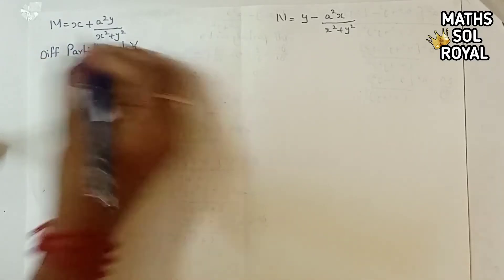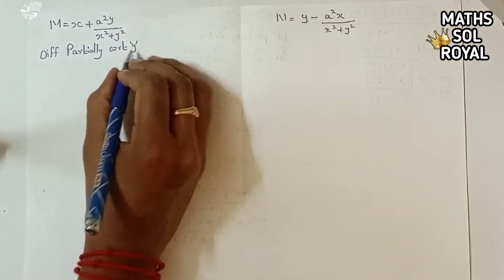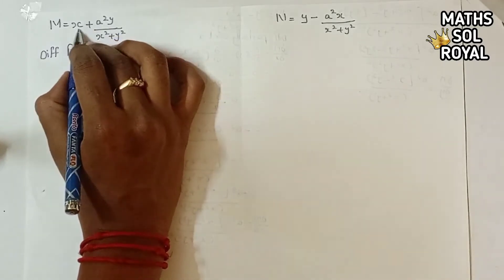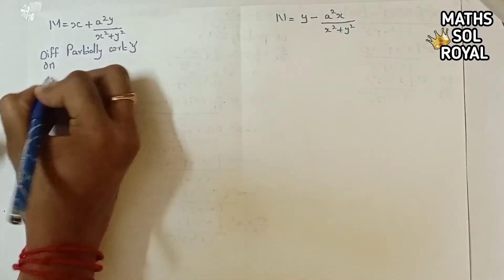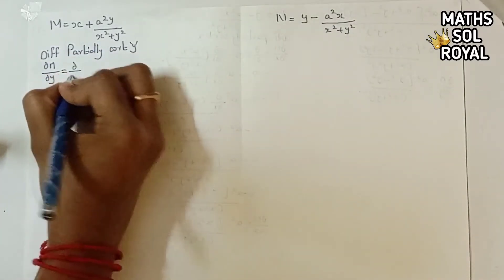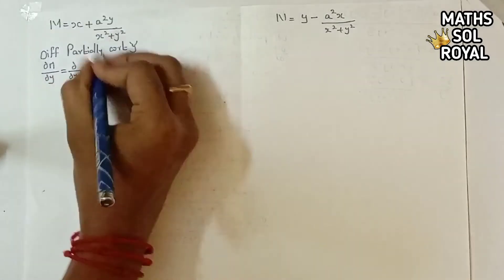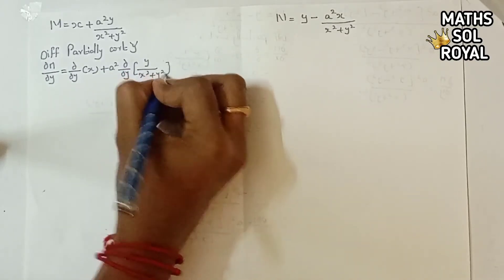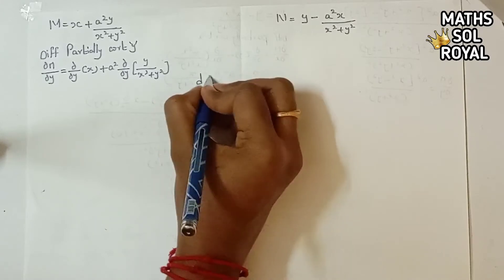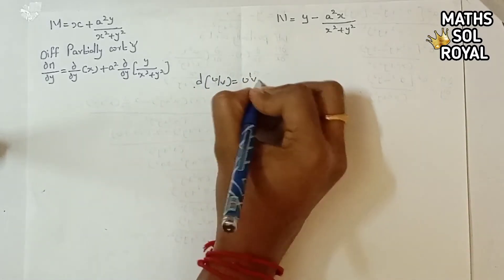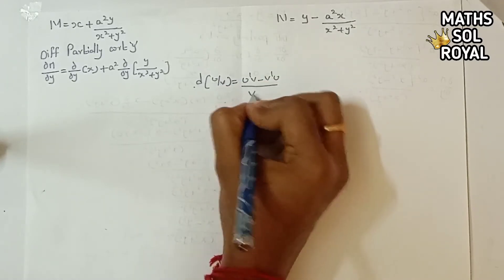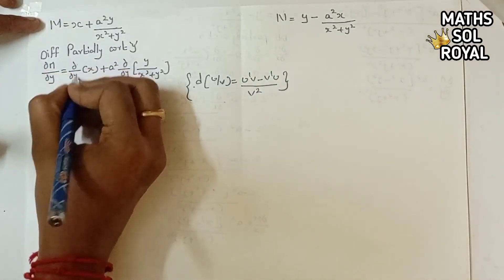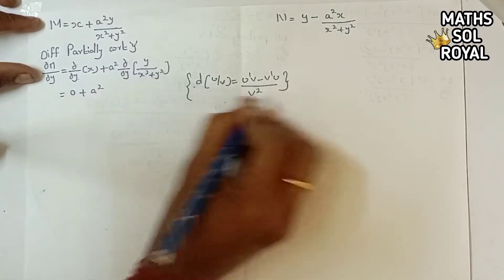With respect to y, only y terms are differentiated; remaining terms are treated as constants. Here a² is constant, x is constant. So ∂M/∂y = ∂/∂y of x (constant gives 0) plus a² · ∂/∂y of [y/(x² + y²)]. We use the quotient rule: d/dx(u/v) = (u'v - v'u) / v².